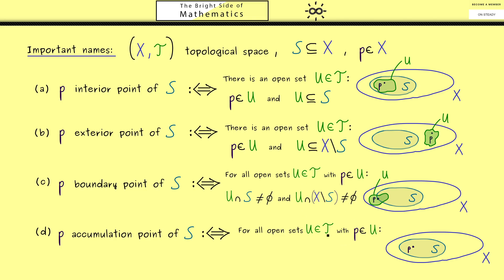Hence, as before, we can describe this when we look at all open sets U that contain the point p. And then we want that something from the set S remains. Or in other words, the intersection with the set S should not be the empty set. Here, the crucial thing is that this works no matter which open set U around p we choose.